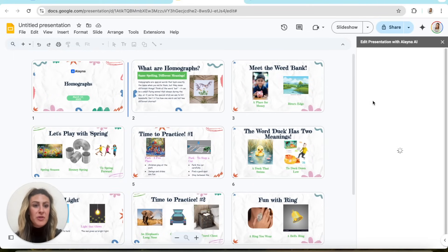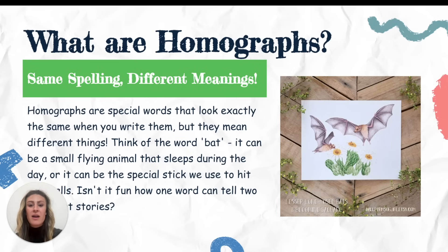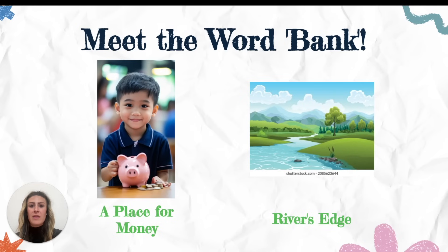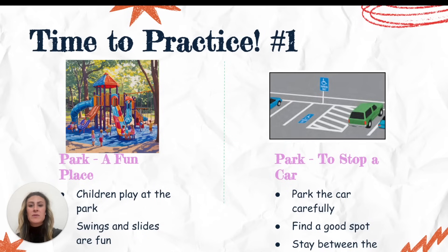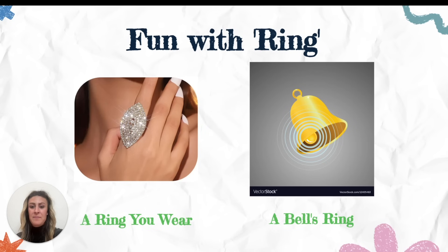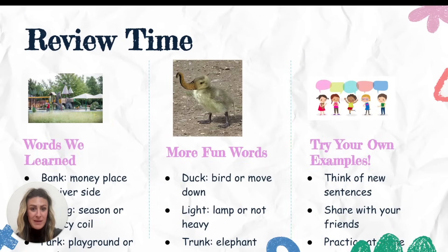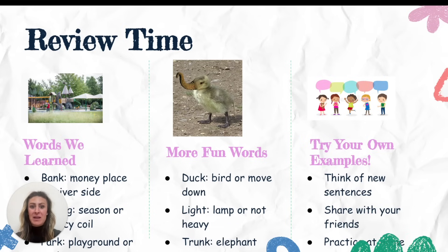Let me show you what it looks like in full screen. So here's an example of what it created — I haven't touched this. It tells you what homographs are, and then you can go in and edit: if you want less words, more words, change the pictures, anything you want. There's a word bank, examples like 'spring,' and opportunities to practice the skill. It did all of this for me — this would normally take me hours to do. And honestly it's more colorful, more than I would include — it's all around better. It did it in seconds, which blows my mind.